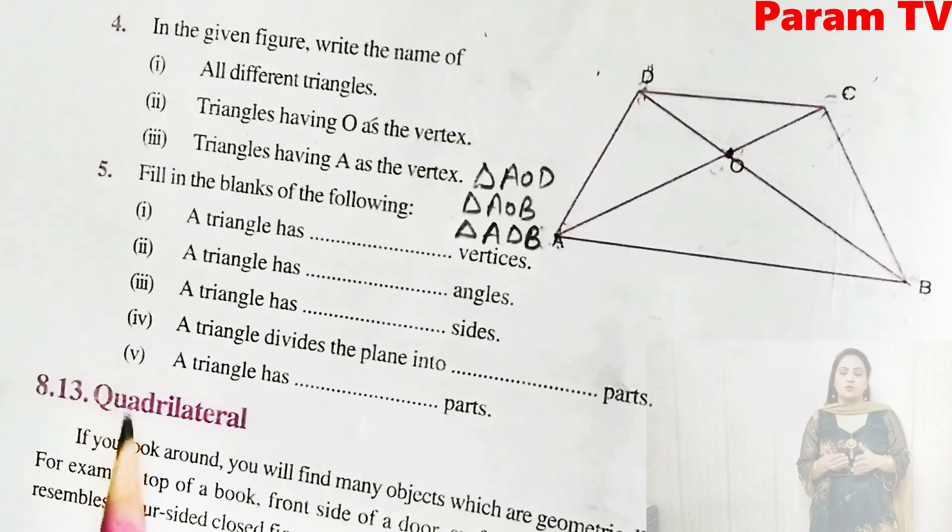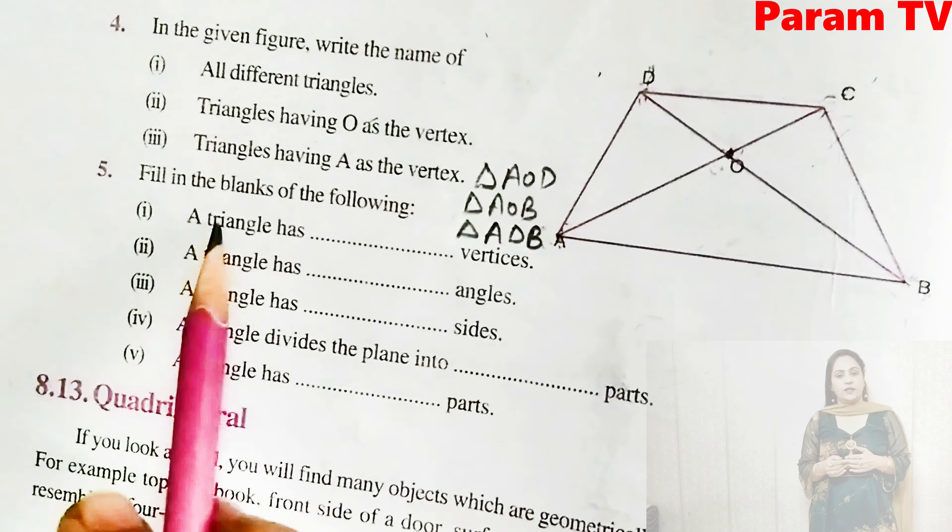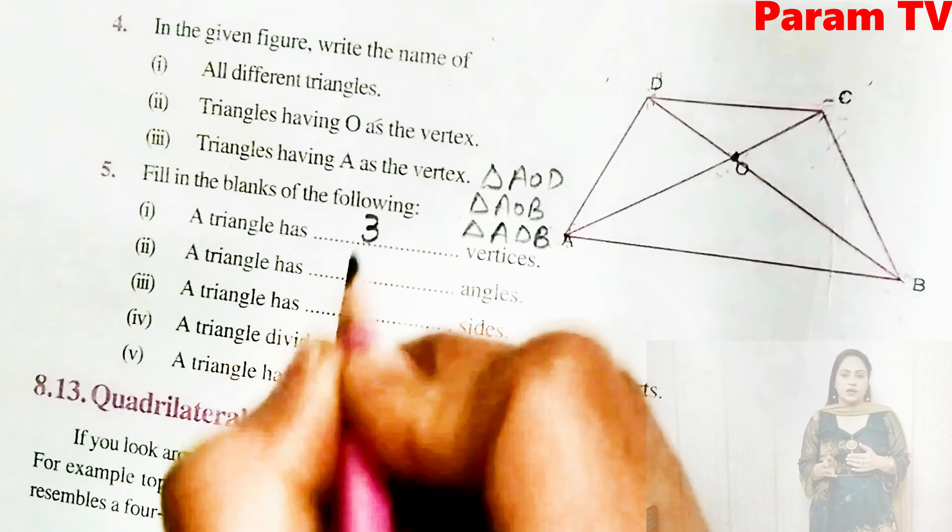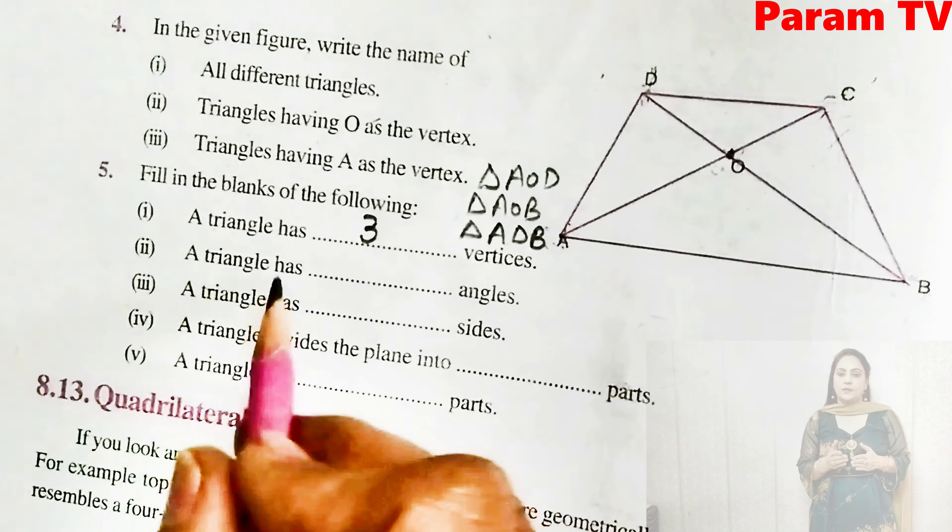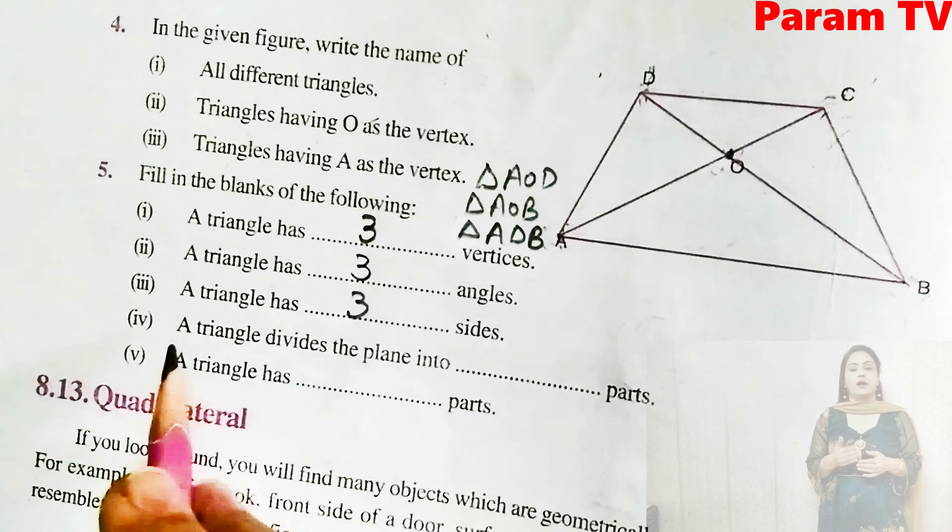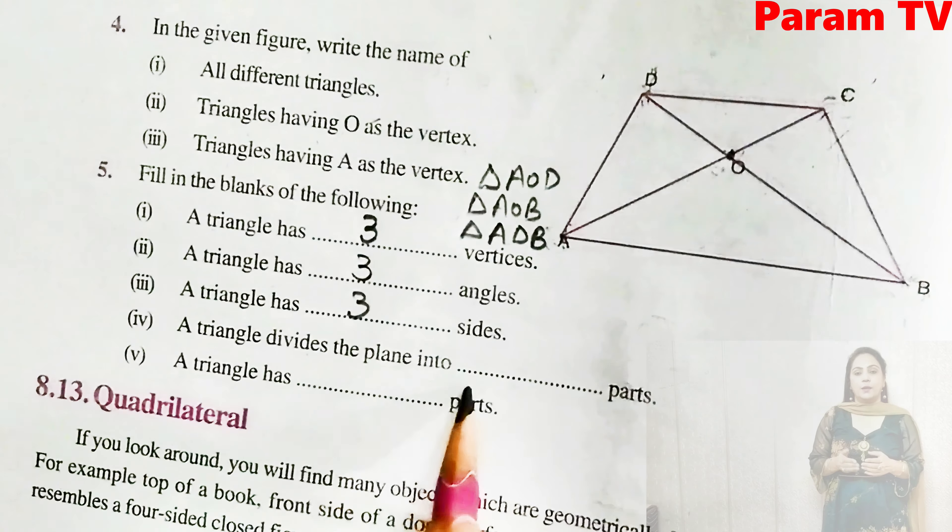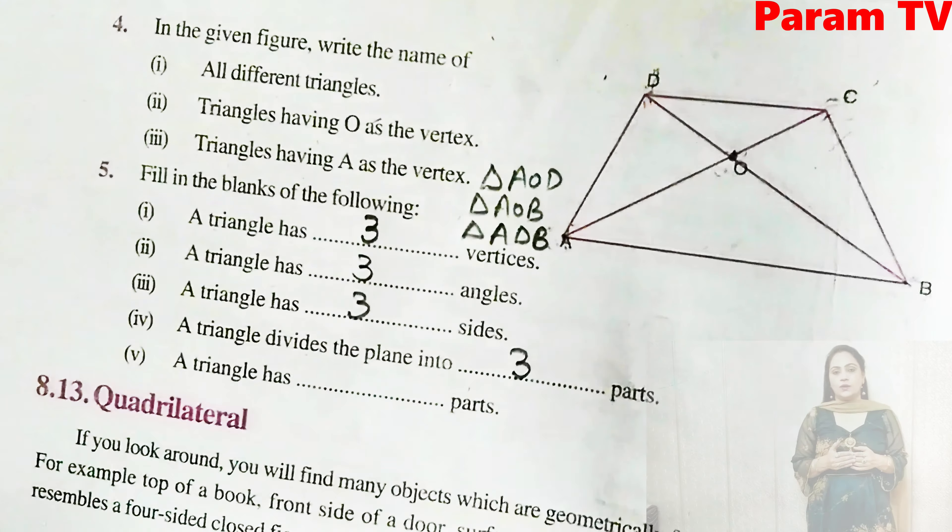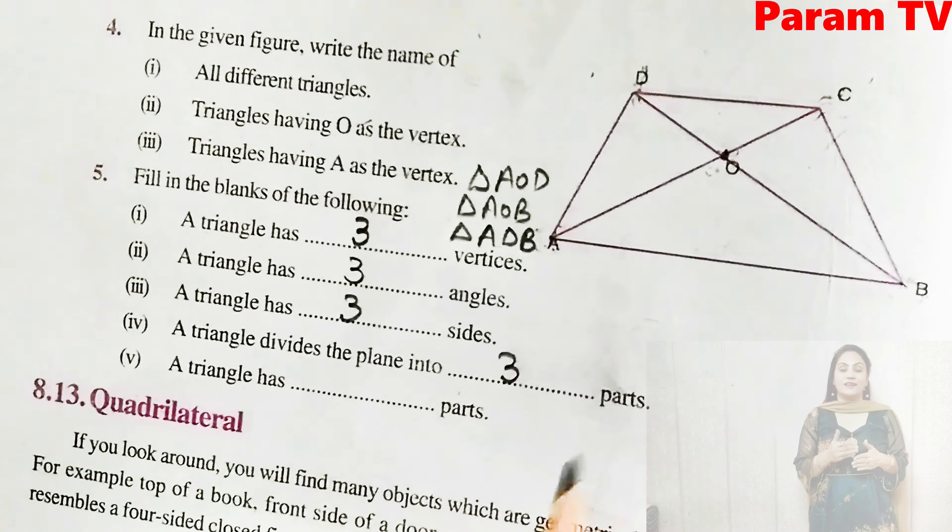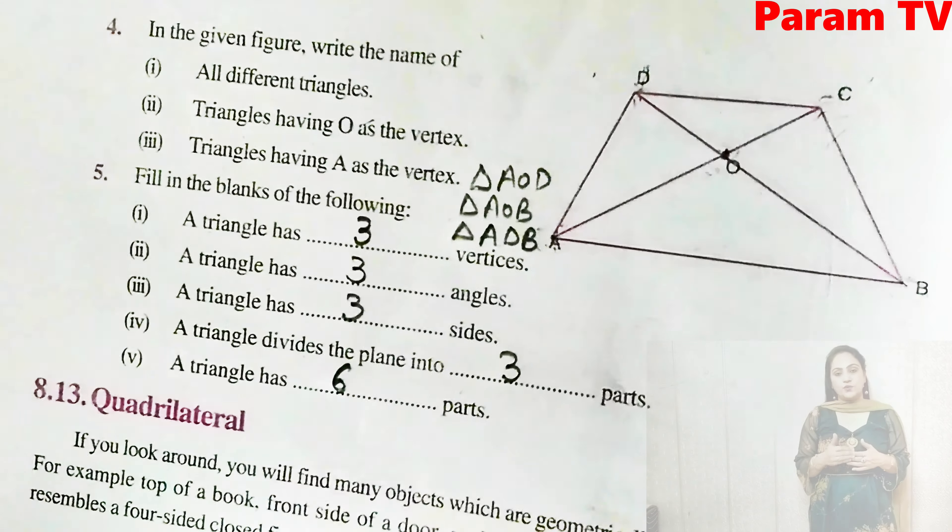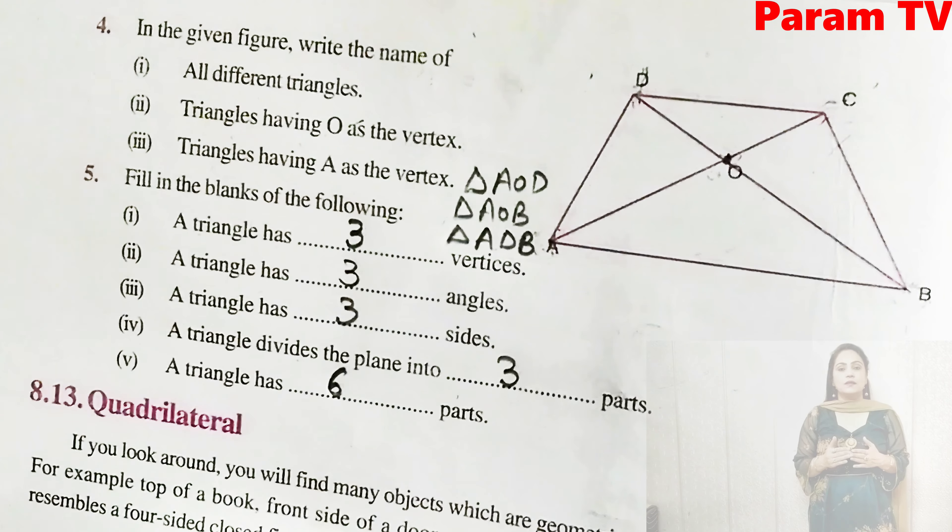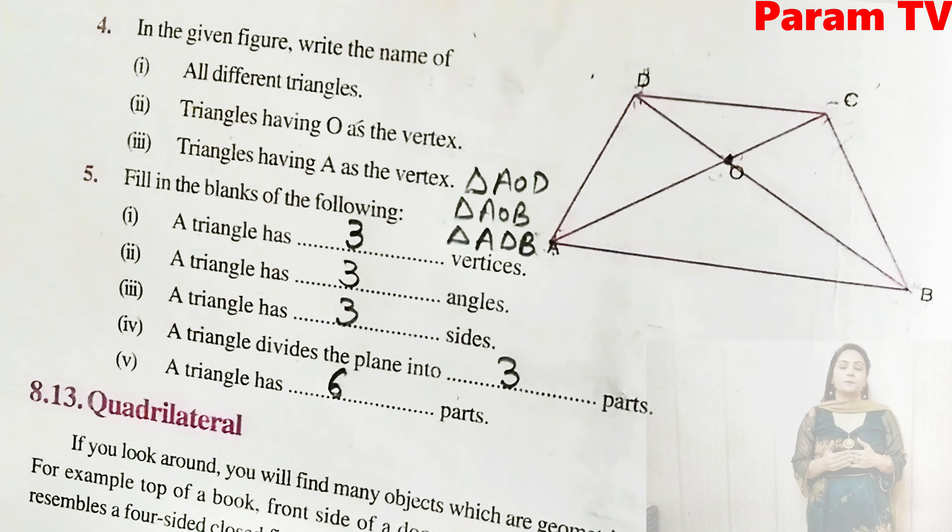Next is question number five. Fill in the blanks. A triangle has three vertices. We just learned three vertices. A triangle has three angles. A triangle has three sides. And a triangle divides the plane into three parts. What three parts? Interior, exterior, and on the boundary. A triangle has six parts. One triangle has six parts. It has three vertices and three angles.